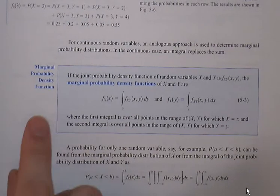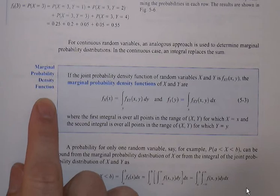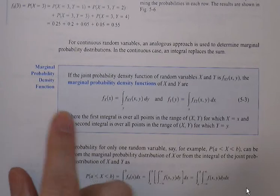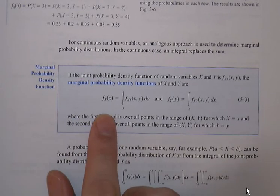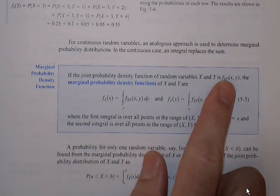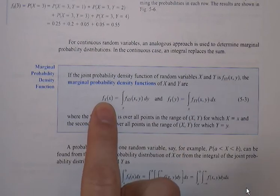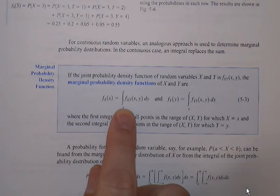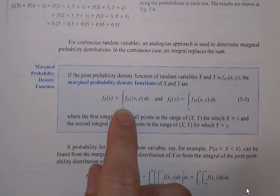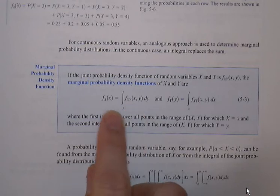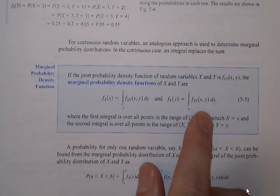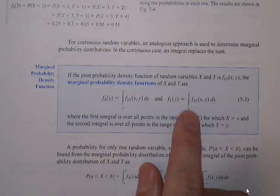We talked about marginal probability mass functions. Here's what it looks like for the continuous world. We have a joint up here, and if we want the marginal, then we're going to sum, or in this case now, because it's continuous, we're going to integrate over all of the other possibilities, and that will get us back to the marginal. Or we can integrate the joint with respect to the other random variable and get the other marginal.